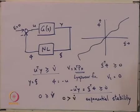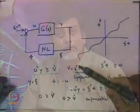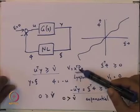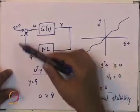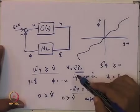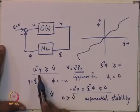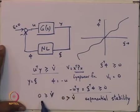So what we are going to do in this class is explore what new conclusions we can draw using this rather powerful result. Maybe before we do that, I would like to use this V — which we have got from the positive definite matrix P — as a Lyapunov function and show that the resulting system is asymptotically stable. In order to show that, I essentially only have to show that U transpose Y is greater than or equal to V-dot, and then the rest we have already seen.